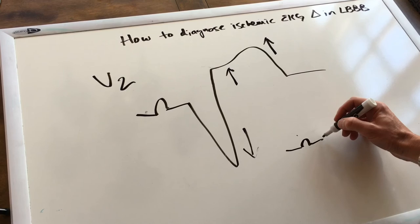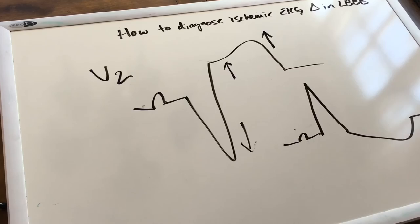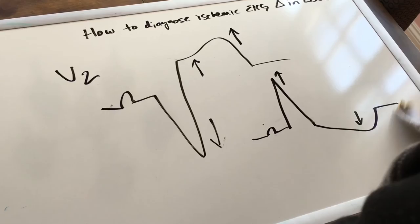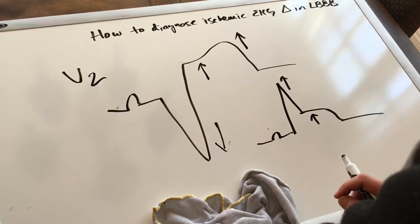Or in a lateral lead where you have a dominant R wave — instead of the normal appearance where the QRS is going up and the ST and the T are going down — you would see inappropriate concordance where the ST segment and the QRS complex are going in the same direction.